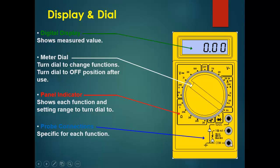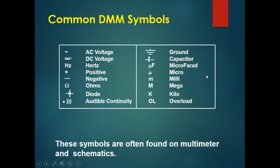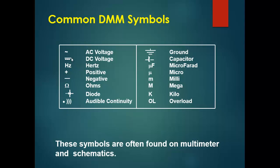These are the common digital multimeter symbols. This one is for AC voltage, this symbol is for DC voltage, this is for Hertz which is a unit of frequency, and this symbol is for audible continuity — you can hear a sound whenever you measure the continuity between two points.